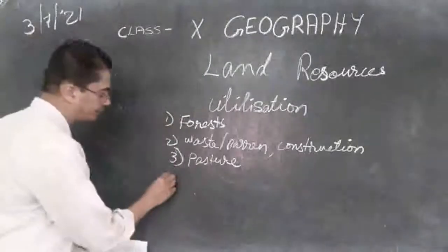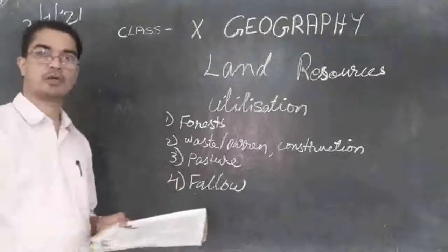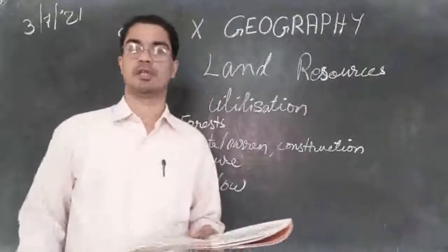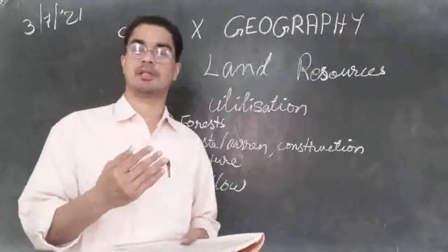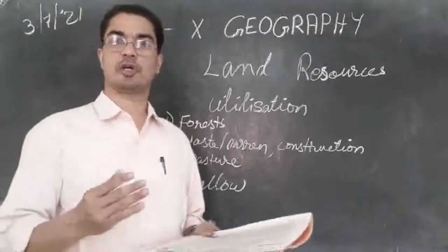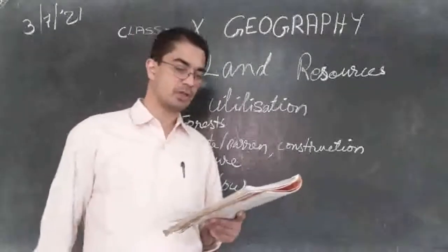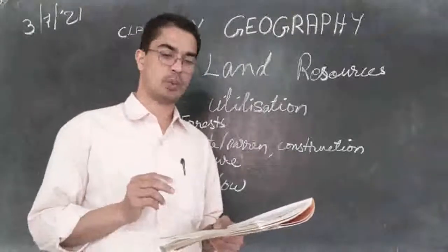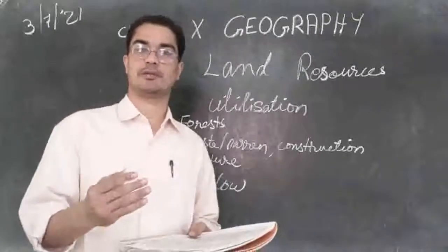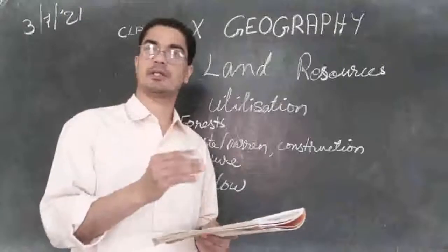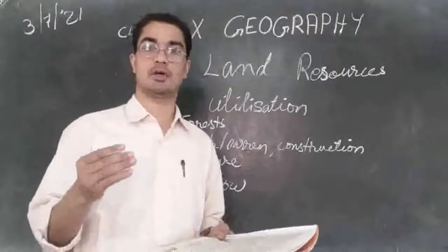Let us see about fallow lands. Fallow means keeping the land for some time to allow it to recover the quality of the soil. If you continuously cultivate, the soil quality and fertility is lost. So in order to regain its fertility, we keep it for some time without cultivating anything — that is called fallow land. Current fallow is land left without cultivation for one year or less than one agricultural year. For example, most paddy fields: after cultivating rice, we leave it free for the remaining six or seven months — that is current fallow.